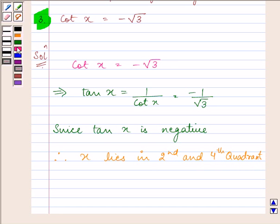So let us find out at which point tan x equals minus 1 by root 3.